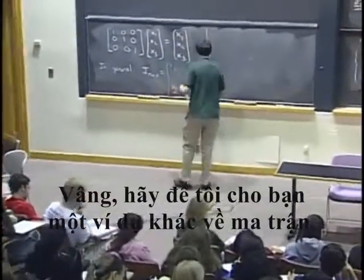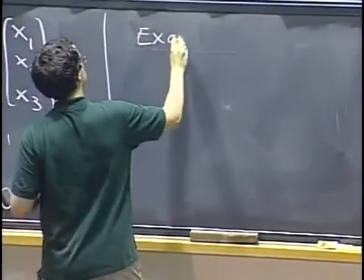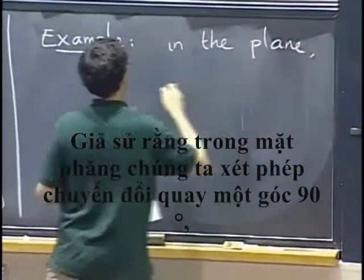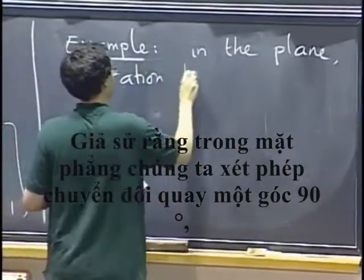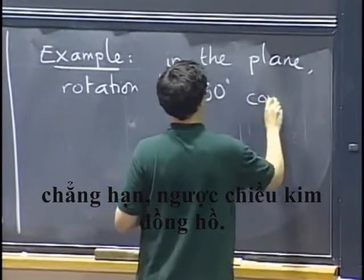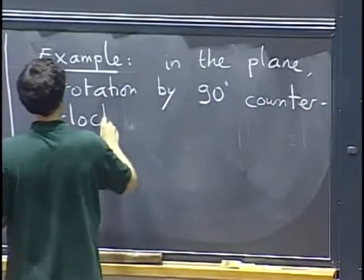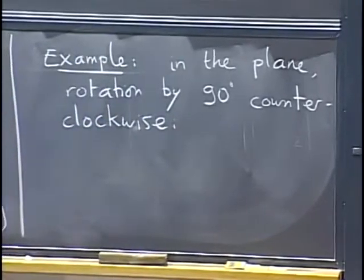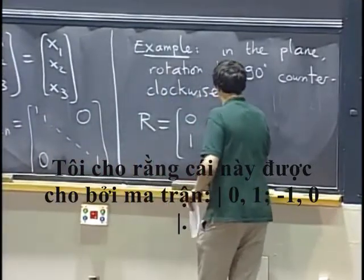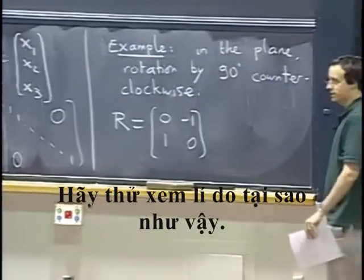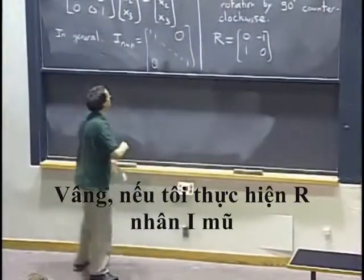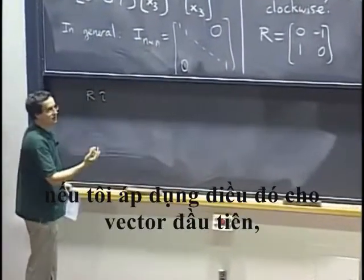Let me give another example. In the plane, consider the transformation that does rotation by 90 degrees counterclockwise. I claim this is given by the matrix with entries 0, −1 in the first column and 1, 0 in the second column — that is, the 2×2 matrix [[0, −1],[1, 0]]. Let's try to see why that is the case.